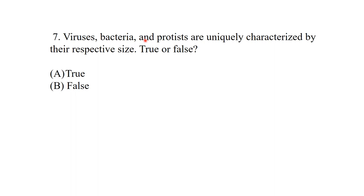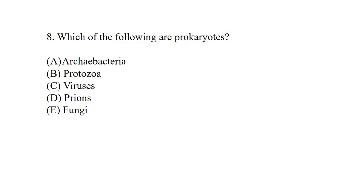Are viruses, bacteria, and protists uniquely characterized by their respective size? No, that is false. Which of the following are prokaryotes? Amongst archaea, protozoa, viruses, prions, and fungi — the best answer is archaea. Protozoa are eukaryotes, viruses are acellular particles, prions are infectious proteins, and fungi are eukaryotes. So the best answer is archaea.